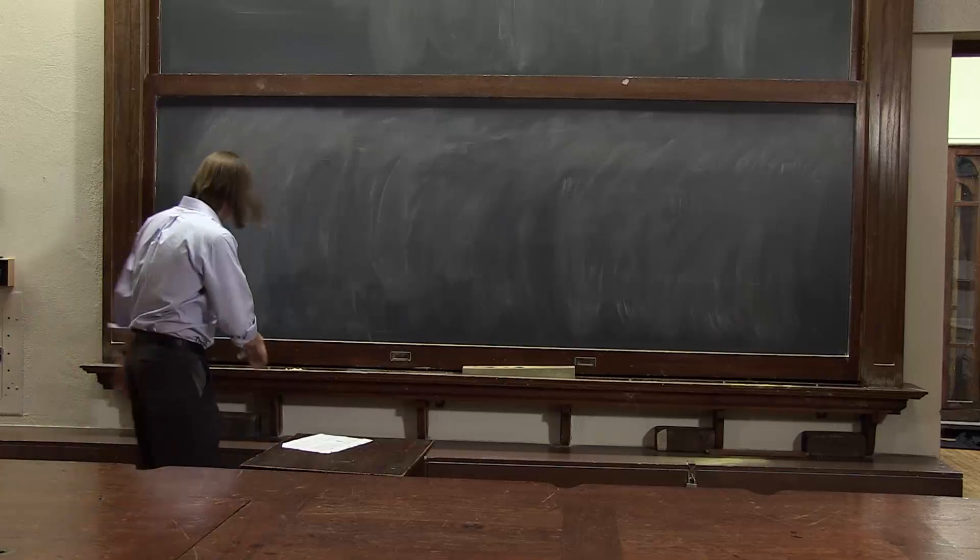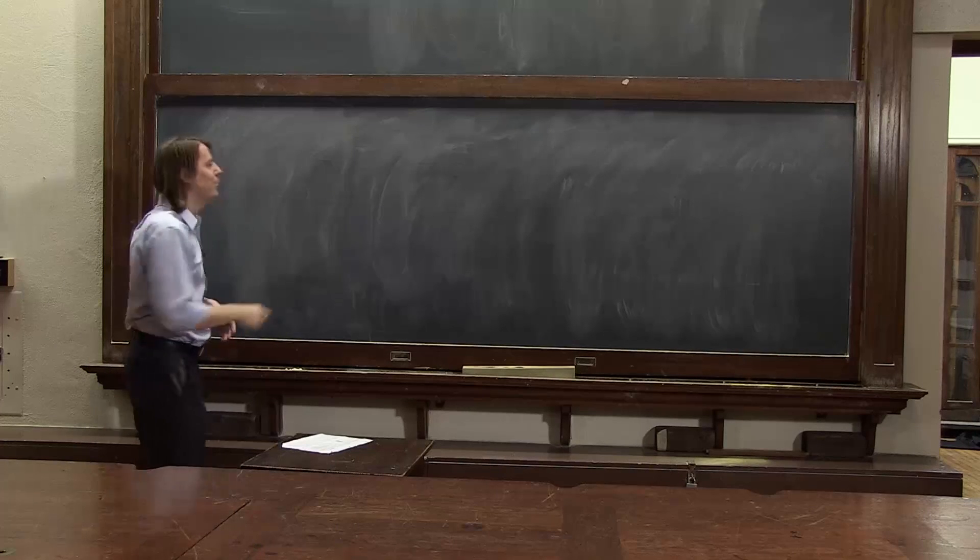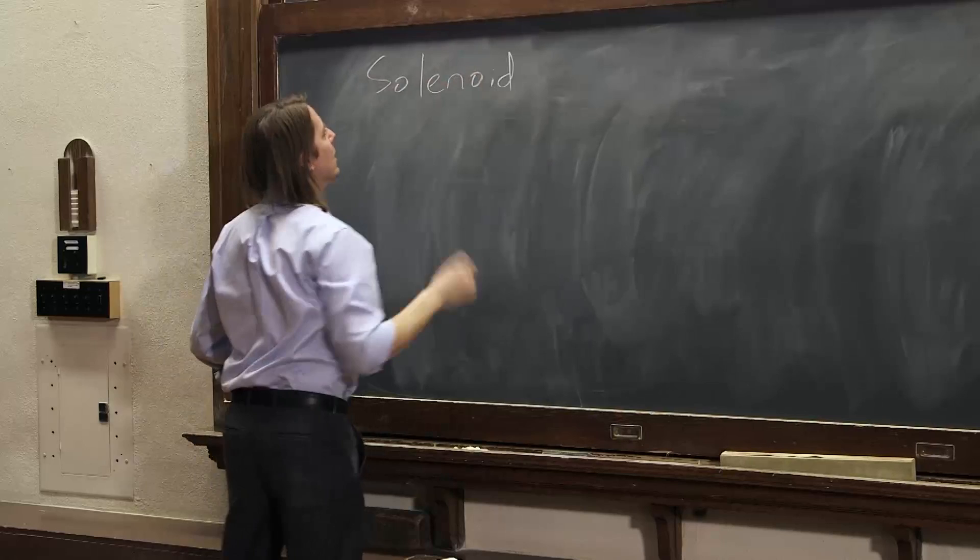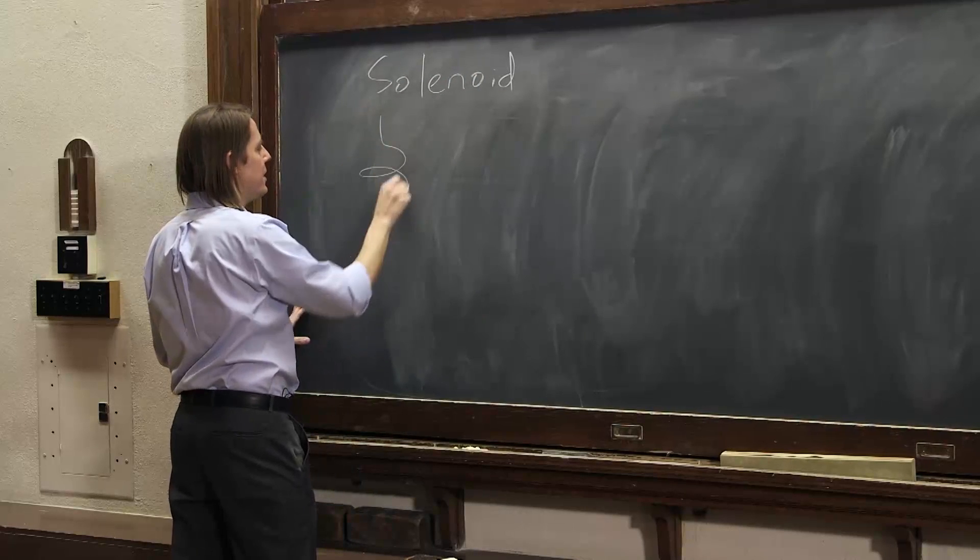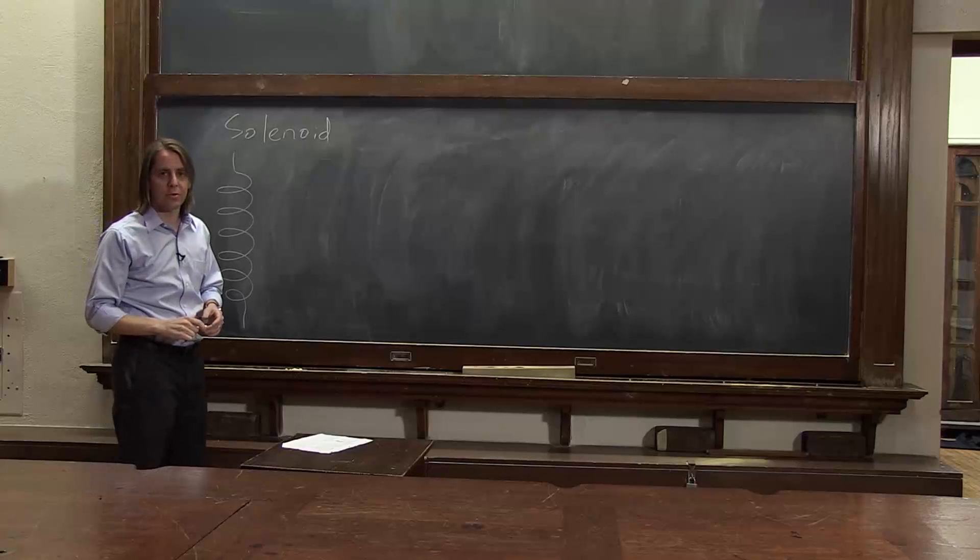Okay, so now we're going to think about an object that gives us a nice region of uniform magnetic field. That object is a solenoid. A solenoid is really just a coil of wire that we send current through.